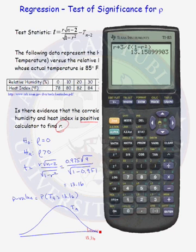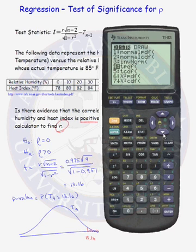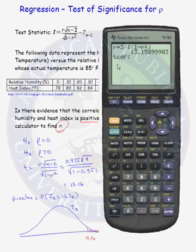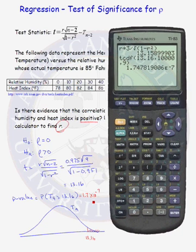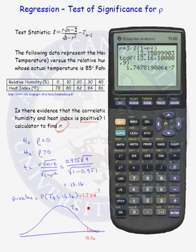To find the p-value, we use a t-table or the calculator. Go to 2nd VARS, down to number five, TCDF — this gives the area under a t-distribution curve. Enter the lower bound of 13.16, an upper bound (effectively infinity), and 9 degrees of freedom. Our p-value is 1.75 times 10 to the negative seventh — very, very small. It is virtually impossible that we would observe these eleven data pairs if the true correlation were zero. Because the p-value is so small, we reject the null hypothesis that the correlation between relative humidity and heat index equals zero.